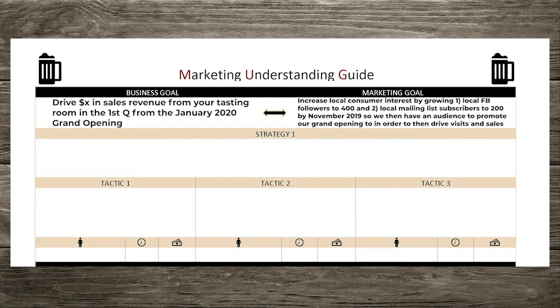That last part — 'to then drive visits and sales' — would be a new kind of vague marketing goal to eventually run through SMART in order to make it actionable and measurable when you're ready to tackle it. So you can see how that one business goal will spawn multiple marketing goals: some like these two that will be contingent on each other, and others that will be unique and can run in parallel.